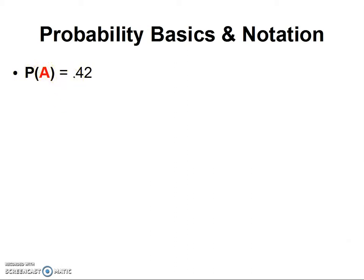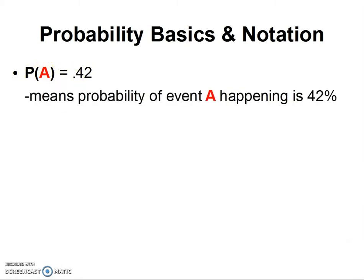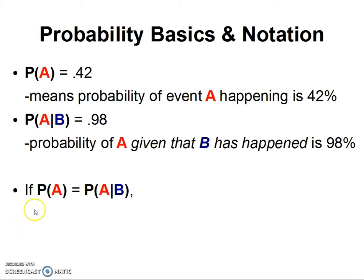Now we've introduced a bar here and another letter. These colored letters represent events. The bar means 'given' or 'conditional on.' So P(A|B) is read as 'the probability of A given B,' or the probability that event A happens given that event B has happened—which equals 98%.